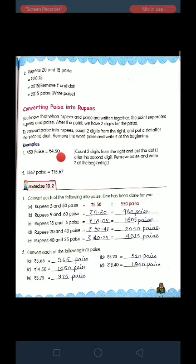Now for conversion of paise into rupees, take two digits from the right and put a dot after the second digit, and at last remove the word paise and write the rupee sign at the beginning.